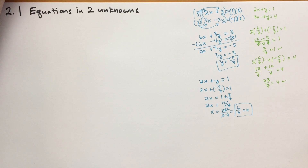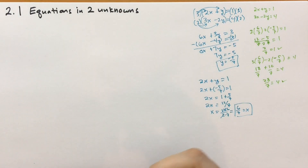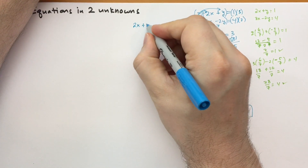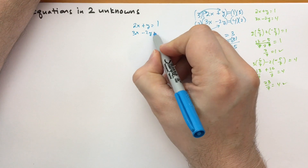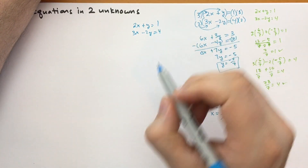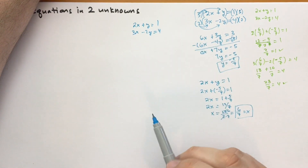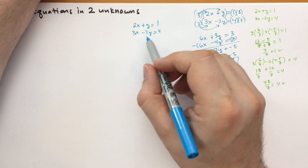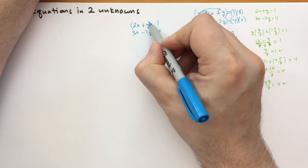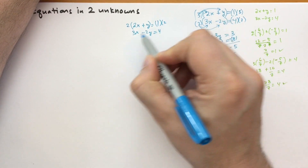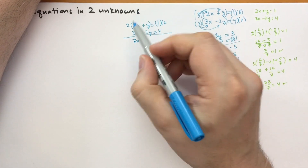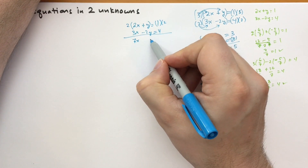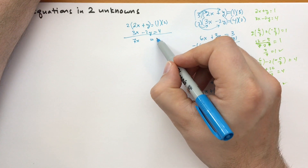We could have done this another way — there's more than one way to skin this cat. We have 2x plus y equals 1 and 3x minus 2y equals 4. Instead of eliminating x first, let's try to eliminate y first. Multiply the top equation by 2 and then add the two equations together. 2 times 2 plus 3 gives 7x. 2y minus 2y cancels out. And 2 times 1 plus 4 equals 6. So 7x equals 6.